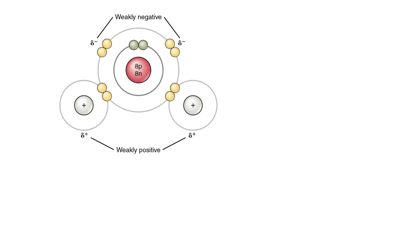Welcome to this video on water. So let's have a look at the structure of water. Water is made up of one atom of oxygen and two atoms of hydrogen covalently bonded together.